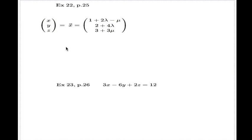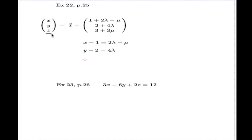In component form: x minus 1 equals 2 lambda; y minus 2 equals 4 lambda; and z minus 3 equals 3 mu. That gives us an easy system where we solve for lambda and mu.